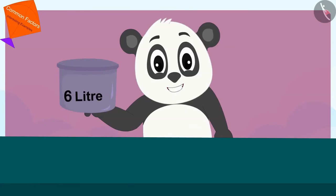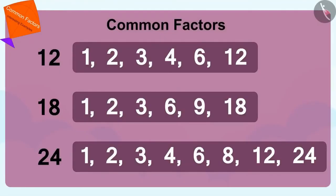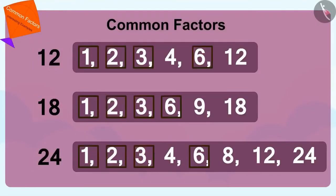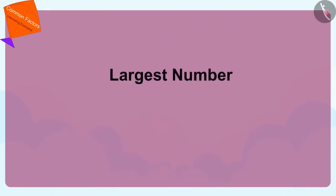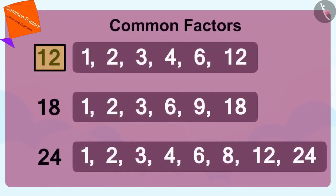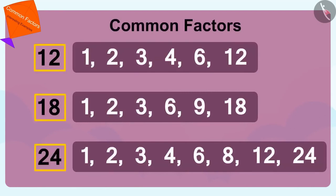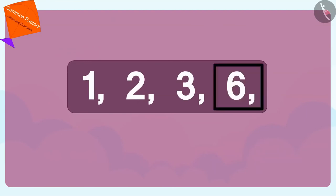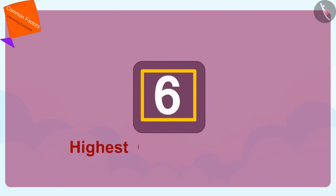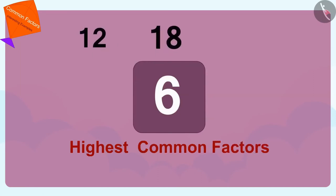Children, out of the common factors of numbers, the largest number is called the highest common factor. Out of all the common factors of 12, 18 and 24, 6 is the largest. Therefore we can say that 6 is the highest common factor of 12, 18 and 24.